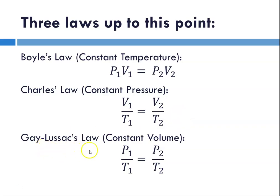And then we talked about Gay-Lussac's law, which is at constant volume. Again, pressure and temperature have a direct relationship. When one goes up the other goes up. So P1 over T1 equals P2 over T2.